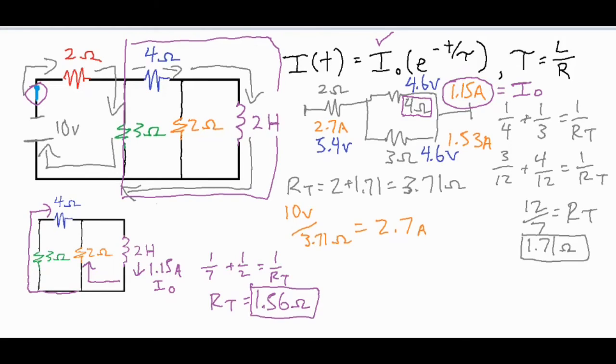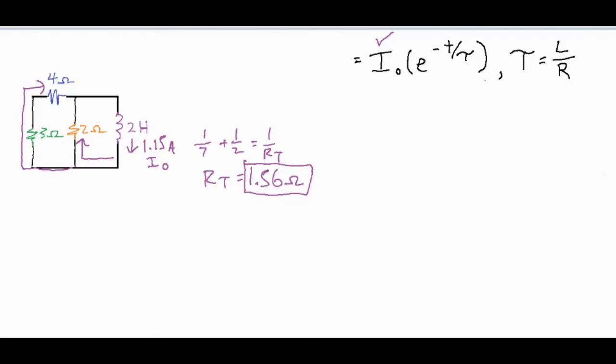Let's rearrange and solve for tau. We have our I₀ and Rₜ to help us move forward with the formula: time constant equals L over R. So tau = L (inductance of 2 henries) over the total resistance of 1.56 ohms. Dividing these gives about 1.29.